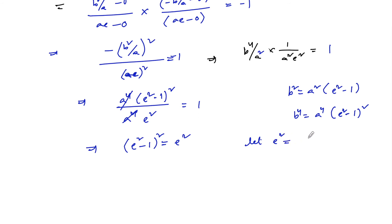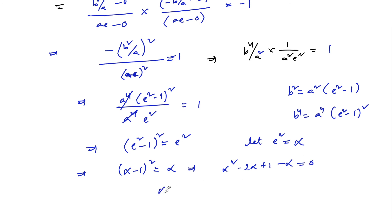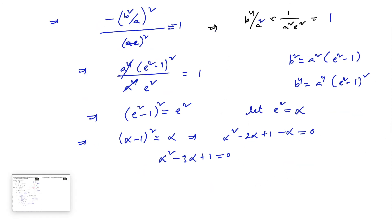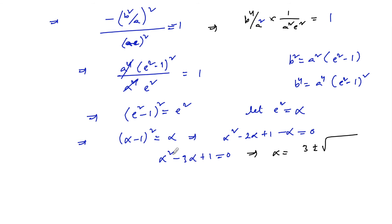Let e² equal some variable α, so that (α − 1)² equals α. Expanding: α² − 2α + 1 − α equals 0, that is α² − 3α + 1 equals 0. Solving by the quadratic formula: α equals 3 plus or minus root of (9 − 4) upon 2, that is α equals (3 ± √5) / 2.